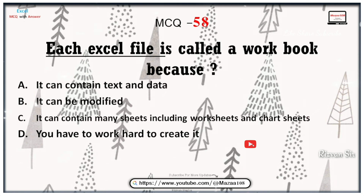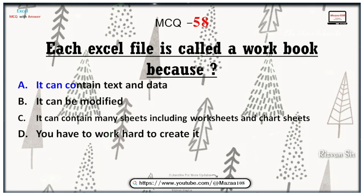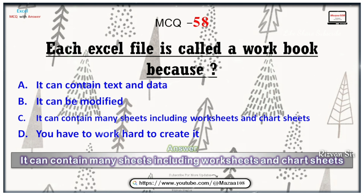Each Excel file is called a workbook because — option A: it can contain text and data. Option B: it can be modified. Option C: it can contain many sheets including the worksheet and the chart sheet. Option D: you have to work hard to create it. The correct answer is: it can contain many sheets including the worksheet and chart sheet.